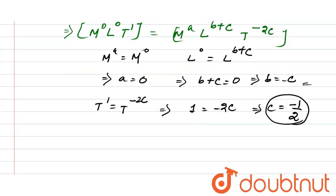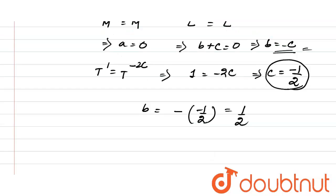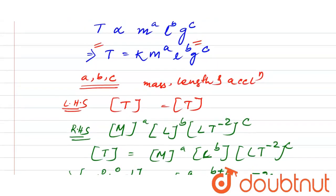From c = -1/2, we can calculate the value of b. Since b = -c, b = -(-1/2) = 1/2. So finally we get a = 0, b = 1/2, and c = -1/2. Putting these values of a, b, c back into the equation T = k · m^a · l^b · g^c.